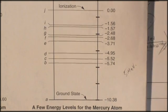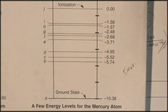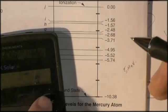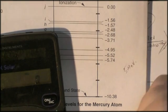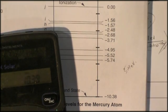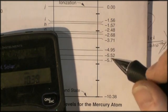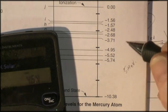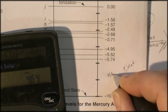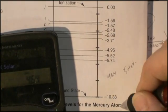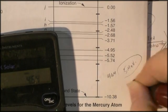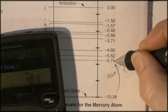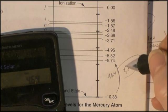Well, the difference between these two energy states can be found just by subtracting. So 10.38 minus 5.74 is 4.64. So, in fact, if we were to add this much energy to the atom, it would eject an electron upwards. And it would get it at least to this state. Let's see if we can't find exactly.